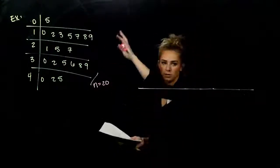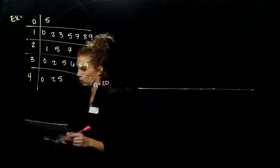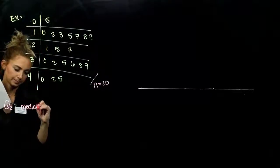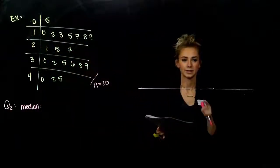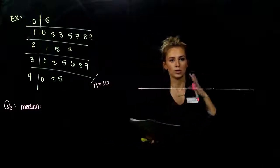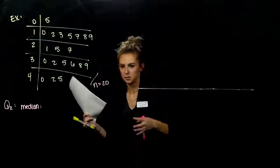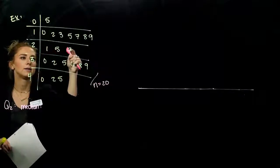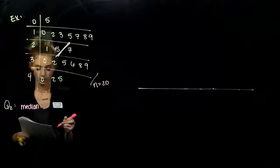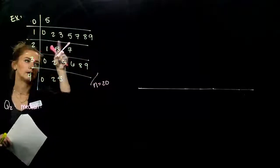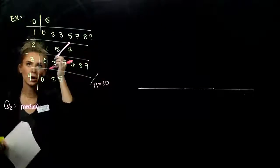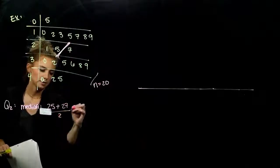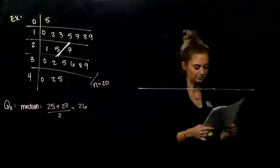Where is Q2? The median for n=20 is at position (20+1)/2 = 10.5, so between the 10th and 11th items. Counting through the stem-and-leaf: the 10th item is 25 and the 11th is 27. The average of those two is 26, so Q2 equals 26.